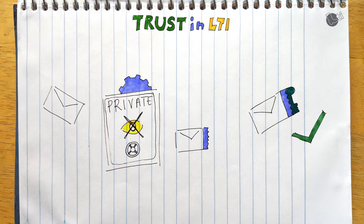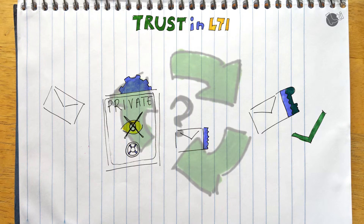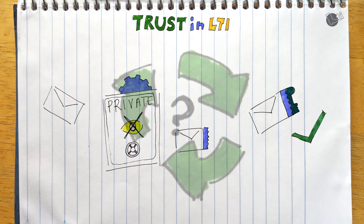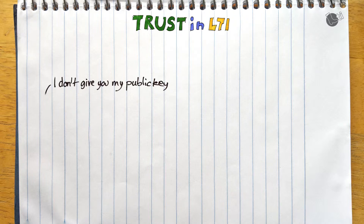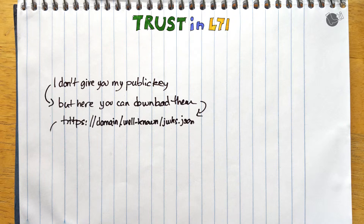In LTI, each side has both a public key and a private key — its own private key and the public key from the other party. But this still doesn't address key rotation: how does one side decide to change its private key and reissue a new public key? LTI uses a mechanism of indirection. Rather than passing the public key directly to integration partners, a platform or tool can instead pass a URL to retrieve the public key — this is known as the JW Key Set URL, or JSON Web Key Set URL.